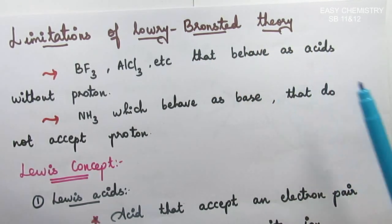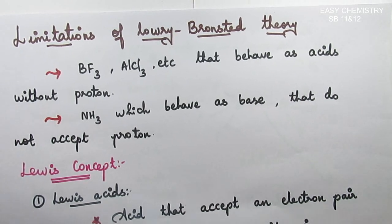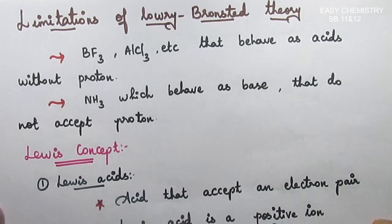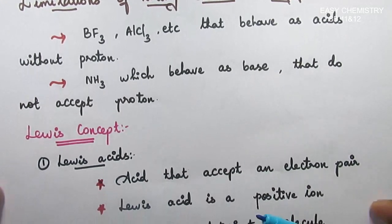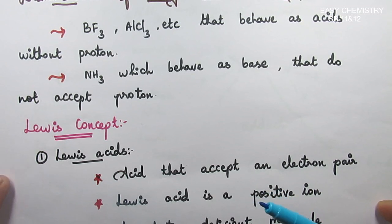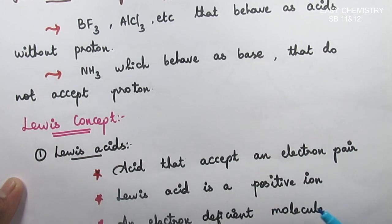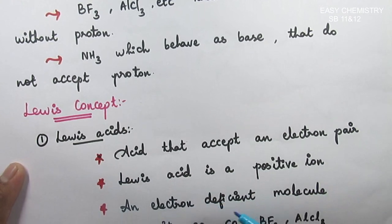Now let us understand Lewis concept. That is the next concept, third concept in this lesson. Lewis acids. Now let us explain what is Lewis concept. First, acid that accepts an electron pair. One pair of electrons accept. That is positive. Here is an electron-deficient molecule.